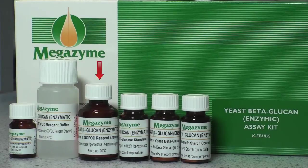Bottle 3 contains GOPOD reagent enzymes. Bottle 4 contains D-glucose standard solution. Bottle 5 contains yeast control beta-glucan preparation, and Bottle 6 contains control starch preparation.